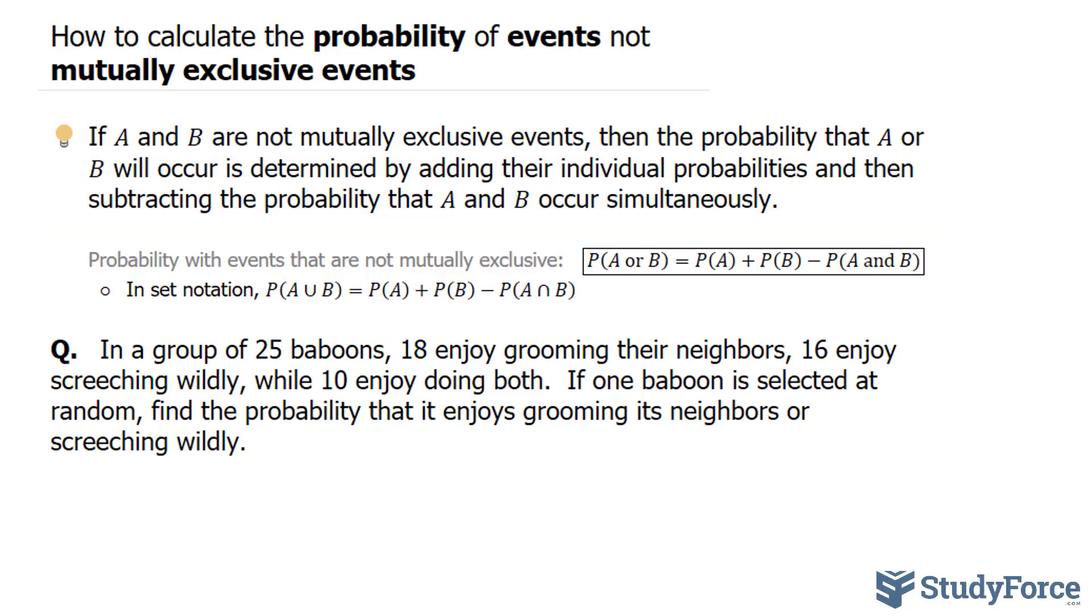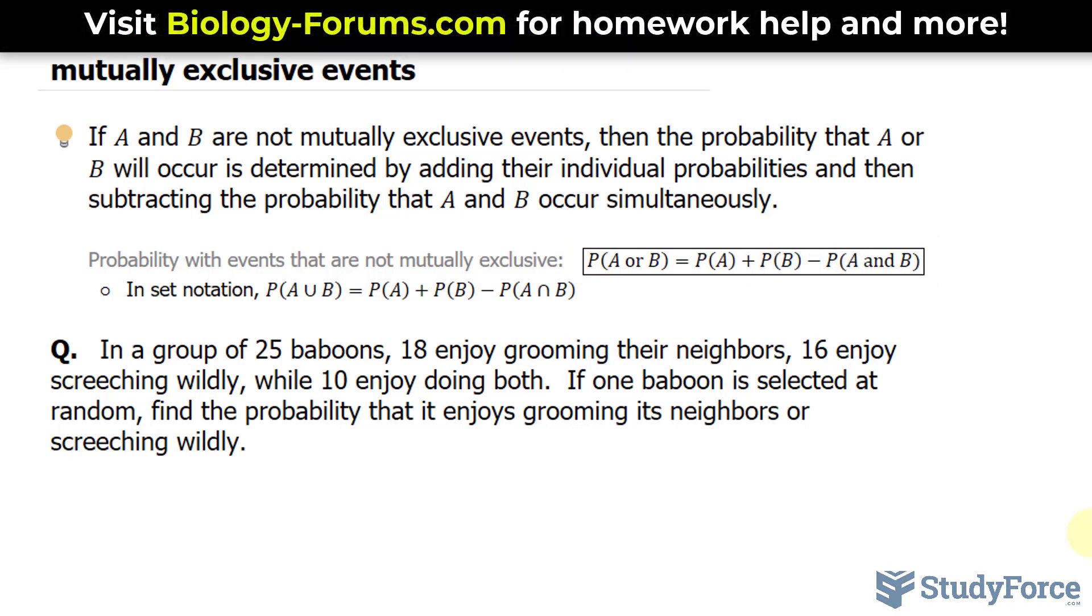And then subtracting the probability that A and B will occur simultaneously. That's mathematically represented right here, where we have the probability of A or B is equal to the probability of A plus the probability of B minus the probability of A and B.